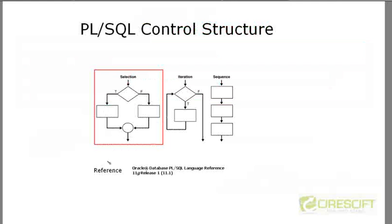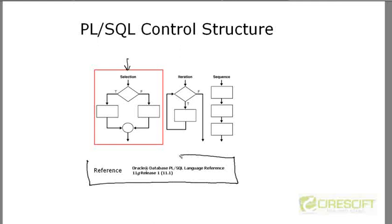There are three ways in Oracle PL/SQL to do all this. Number one is selection — in this video we are going to discuss selection with a lot of examples. Then we are going to discuss iteration and sequence. These three combined together consist of PL/SQL control structures. I've taken this diagram and many examples in this video from the Oracle PL/SQL 11g release guide, which is excellent documentation to see what kinds of examples and features are available in PL/SQL. I strongly recommend you go there and review that guide.